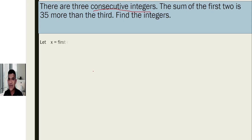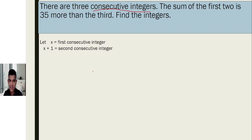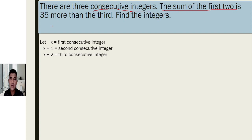If we let x be the first consecutive integer, the next one would be x plus one — that's the second integer — and then x plus two, that's the third consecutive integer. The condition is: the sum of the first two is 35 more than the third. The third is x plus two, so we simply add 35 to this one.